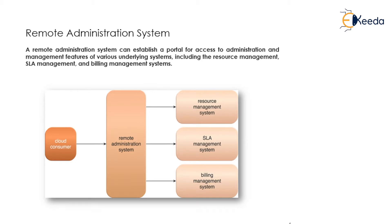A remote administration system is one kind of way under cloud management. A remote administration system can establish a portal for the cloud management system to access administration and management features of various underlying systems, including resource management, service level agreement management, and billing management system. As we can see in this picture, the cloud consumer can use this facility as a remote administration system — with the help of that, they can do resource management, SLA management, and also monitor billing management.